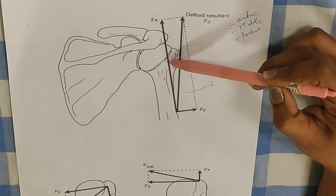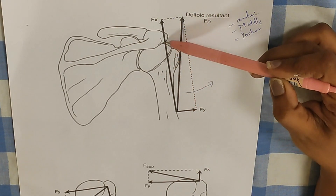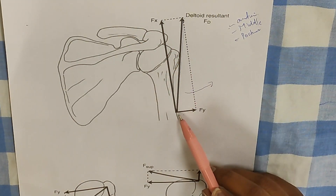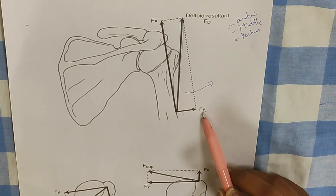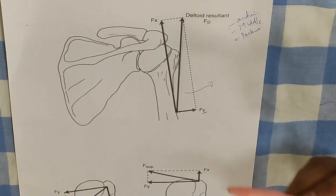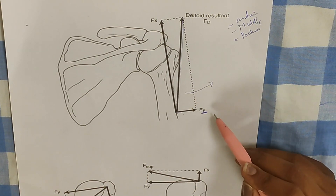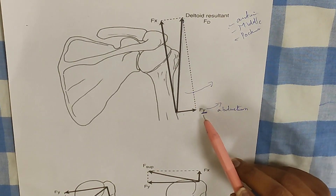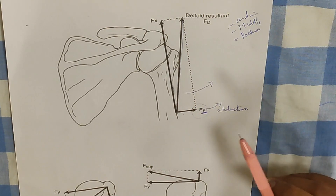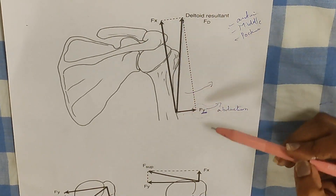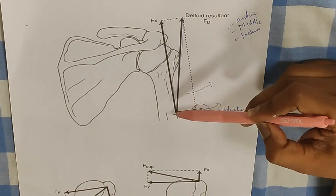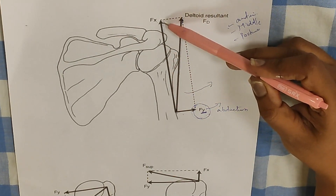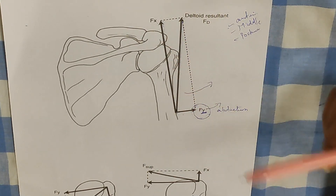you can see that there is a large translatory component — the translatory vector called FX — which creates a shear force at the shoulder in the superior direction. Then you have a smaller rotatory component which is FY. FY is the smaller rotatory force and that is the force that is going to produce abduction at the shoulder. You can see that the rotatory vector is very small, and only a smaller portion of the entire force of deltoid actually produces rotation at the shoulder joint. The translatory force FX is very large.